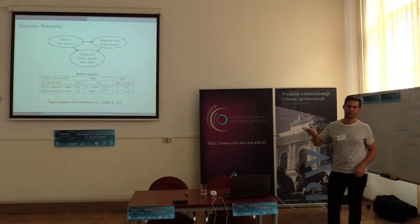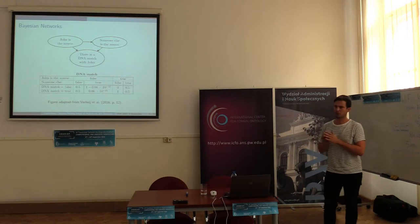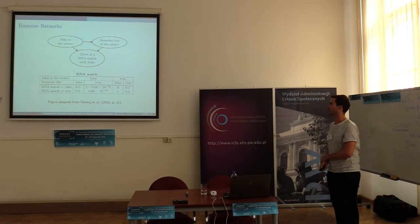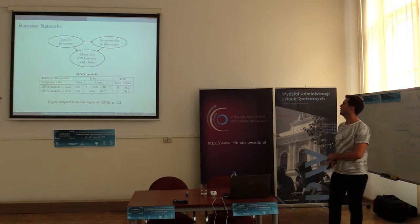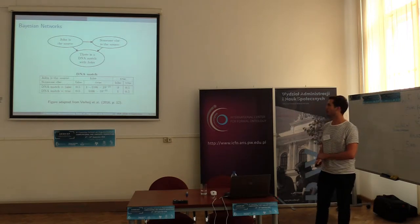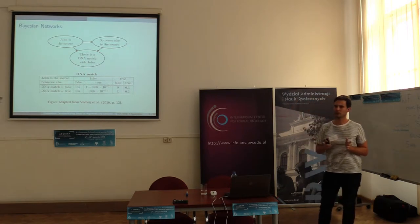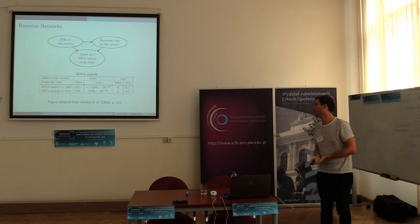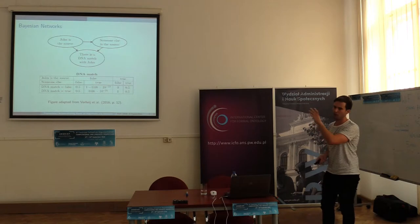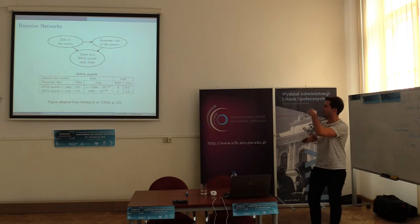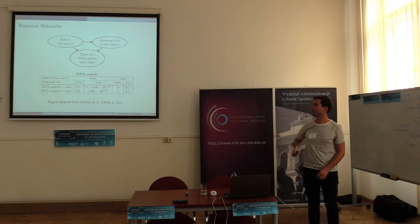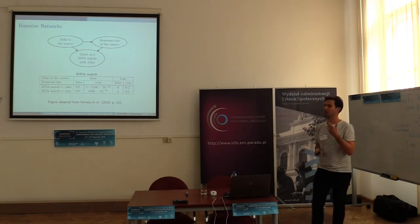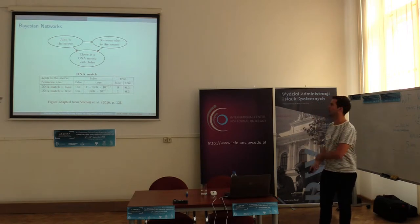For those not familiar with Bayesian networks, here is a very simple one. In short, it's a graphical representation of a joint probability distribution over a set of domain variables. The domain variables are shown at the top of the tables. In this case, we're interested in whether John is the source of some kind of trace material, and there are variables for a DNA match with John and whether someone else is the source. The arcs indicate a dependency relation between variables. For every node, you specify a probability table, and you can then enter evidence — for example, that there is a DNA match — and calculate the updated probability that John is the source of the actual trace.